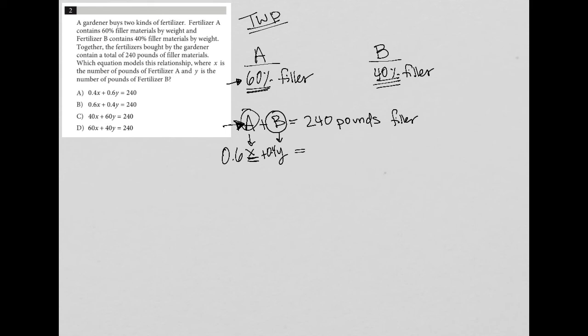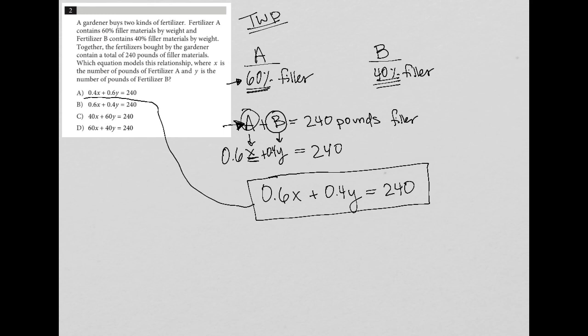And then we add those two together and we get 240. So just to write it more neatly, what I have is 0.6X plus 0.4Y is equal to 240. Again, because this equation is strictly about the pounds of filler, and that's why we have what we have here. The correct answer matches up with choice B.